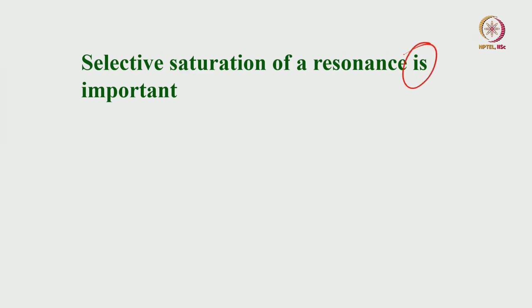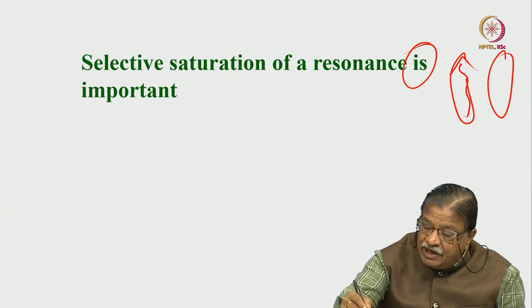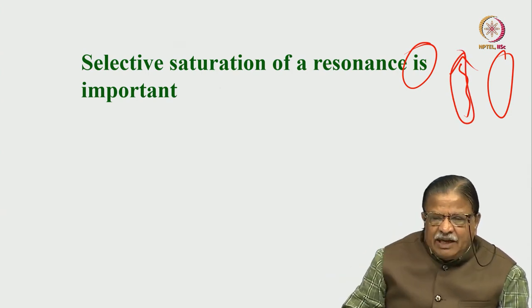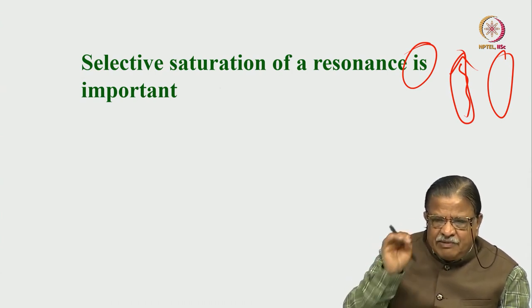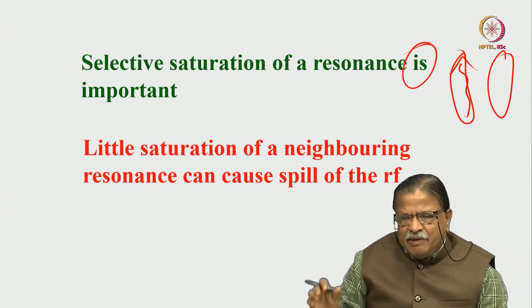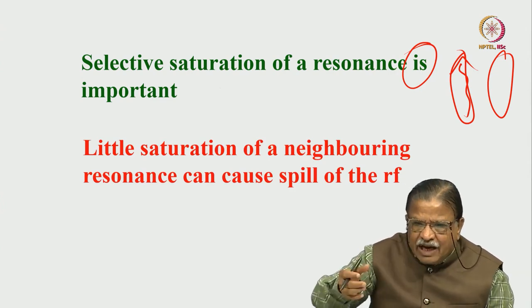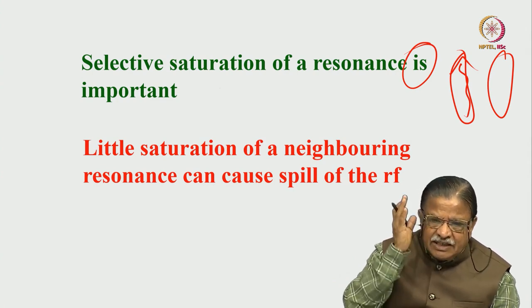Selective saturation of resonance is a very, very important consideration. I am talking about steady-state NOE. In steady-state NOE, I hit a particular resonance and see the change in intensity of another peak. How do you selectively hit this one? I have to selectively saturate one particular resonance. The selectivity is very, very important — the frequency has to be properly set. Otherwise, a little disturbance, and if you saturate a neighboring proton because of spillover of the RF, that can cause problems. So the selectivity of the frequency is an important condition.